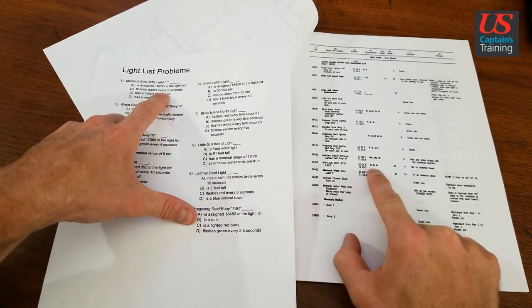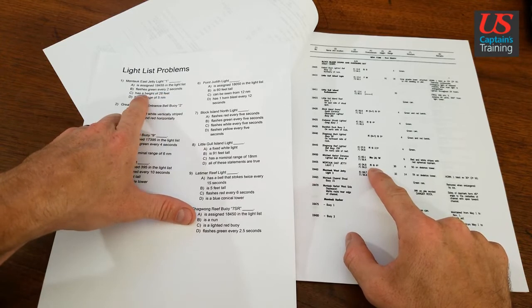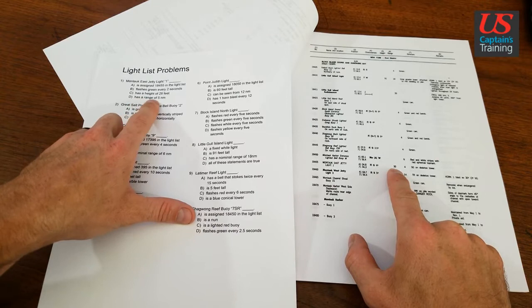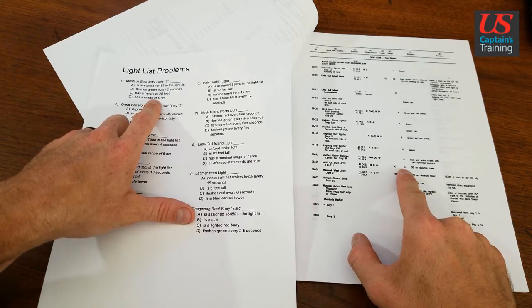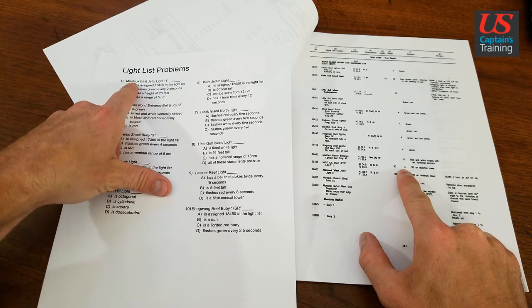Flashes green every two seconds? We get flashes green every four seconds, so we count that one out. Has a height of 28 feet? We get 30 feet, count that one out. Has a range of five nautical miles? Our range is four nautical miles.